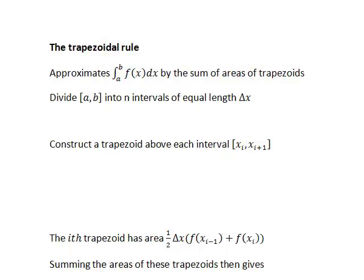In this recording we will look at the trapezoidal rule, which is an example of a method of numerical integration. That is, it is an approximate method of calculating a definite integral from a to b of a particular function. It is called the trapezoidal rule because we work this out by summing the area of a series of trapezoids.